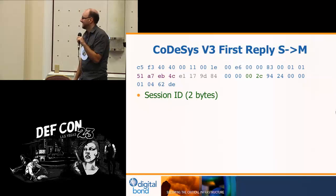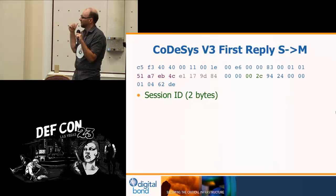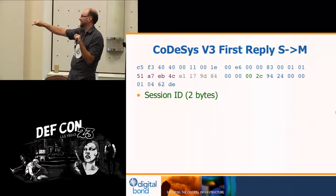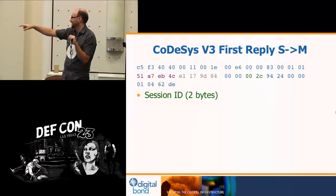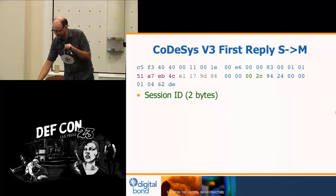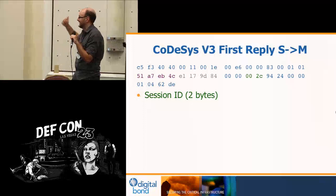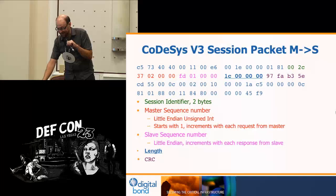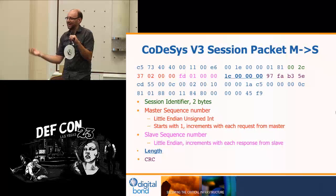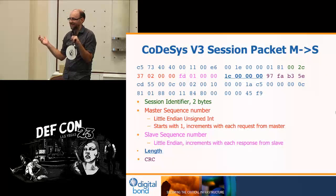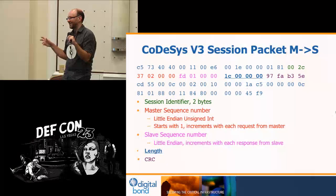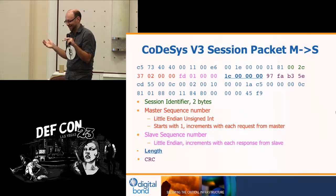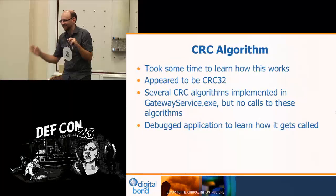When we send that initial session packet, we get the first reply back from the PLC. The source and destination fields — the 1E and E6 — have swapped positions because the packet is going the other way now. The PLC sends back a session ID that the master system must then include in the next packet before it can start issuing commands, along with sequence numbers. What they're really doing is implementing TCP on top of UDP — trying to create some notion of sessions inside a sessionless protocol.